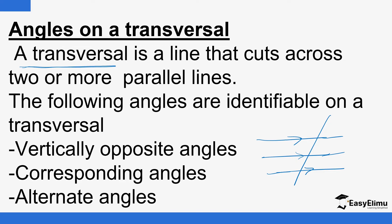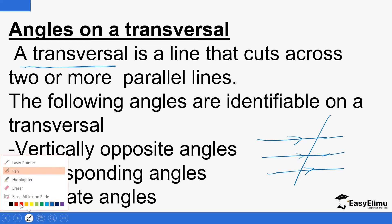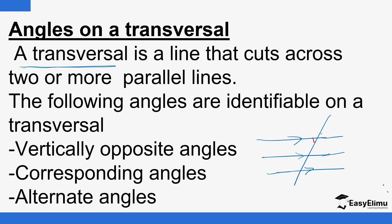The following angles are identifiable on a transversal. We have something called vertically opposite angles. If I can illustrate in a different colour — like these ones. Those ones, we call them vertically opposite angles. So if you have an X, you see this and this, you also have this and this — we call them vertically opposite angles.